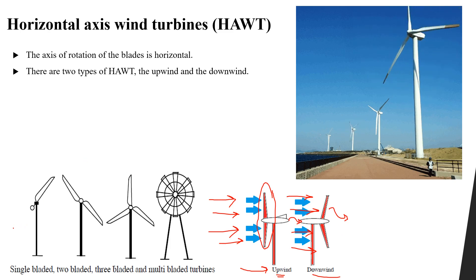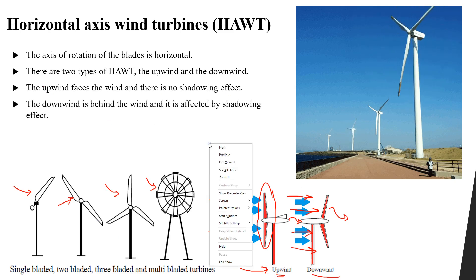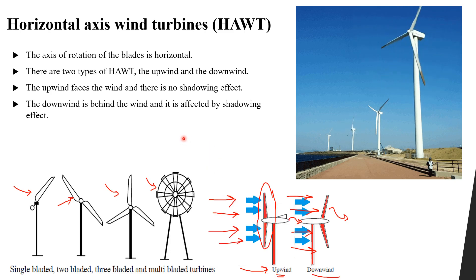Horizontal axis wind turbines also come with different numbers of blades — a single blade, two blades, three blades, or a multi-bladed turbine. We will discuss which one is better in another lesson. The upwind type faces the wind with no shadowing effect, while the downwind type is behind the wind and is affected by the shadowing effect.